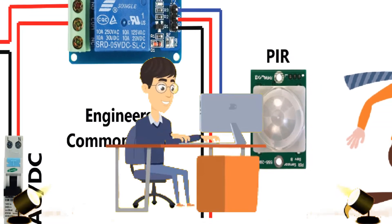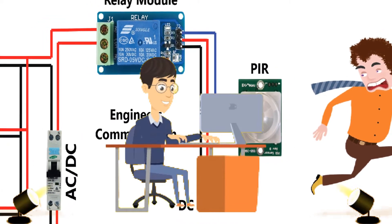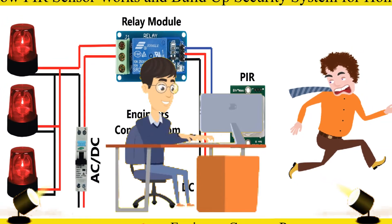PIR sensor needs 5 to 12 volt DC for operating. We use a relay module to control extra load. This relay has a capacity of 10 ampere.